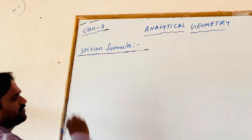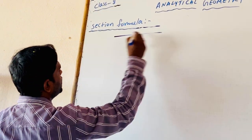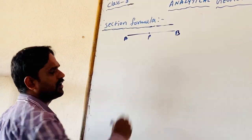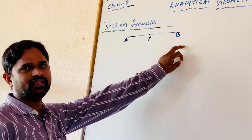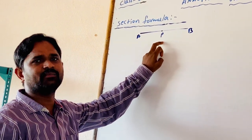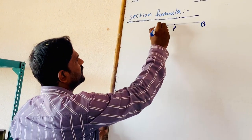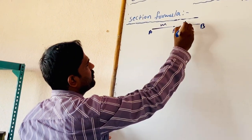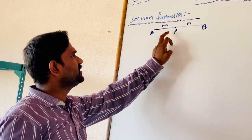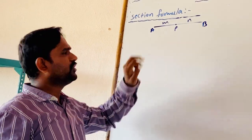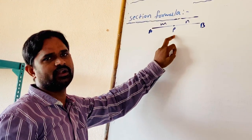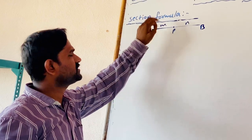What is a section formula? AB is a line segment and a point P in between A and B. Then P is dividing AB internally in some ratio. Let us take AP as M and PB as N. Then P is dividing AB in the ratio M is to N. If we know the A and B coordinates, then how do we find the P coordinates? We have a derivation for this.